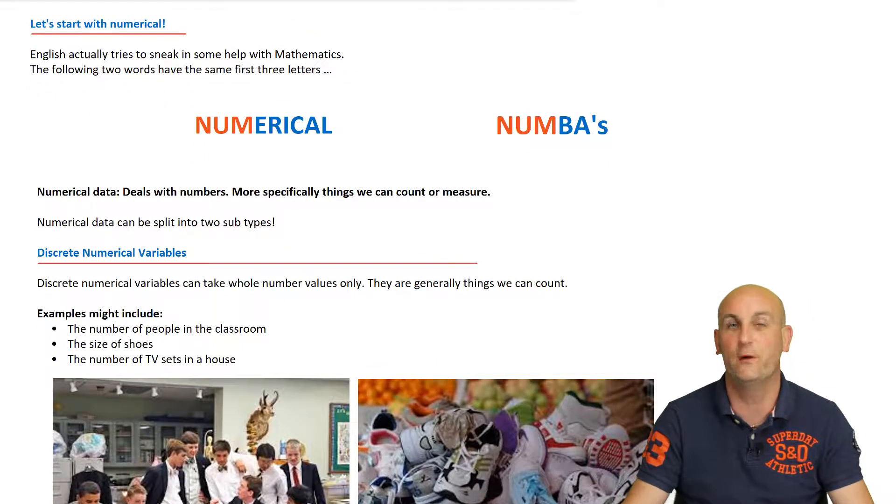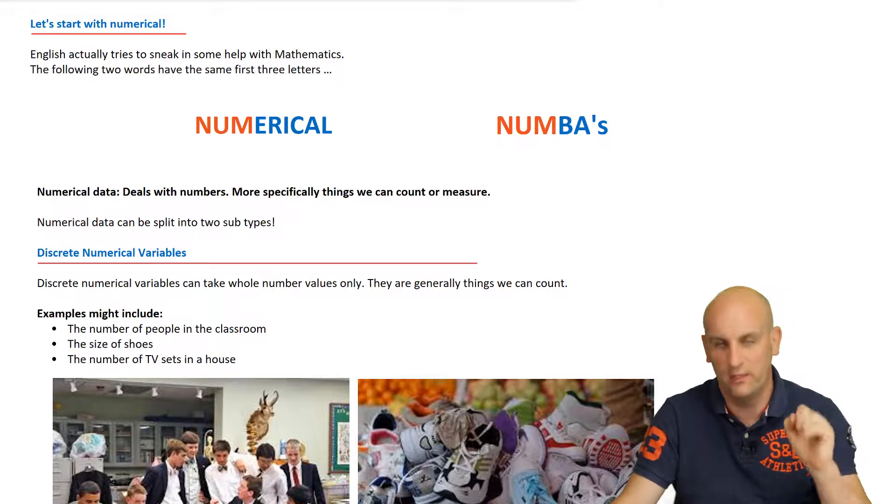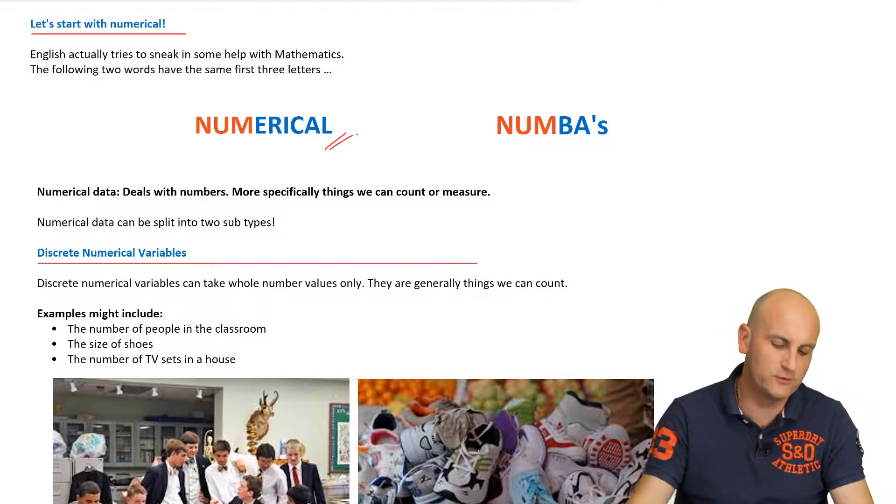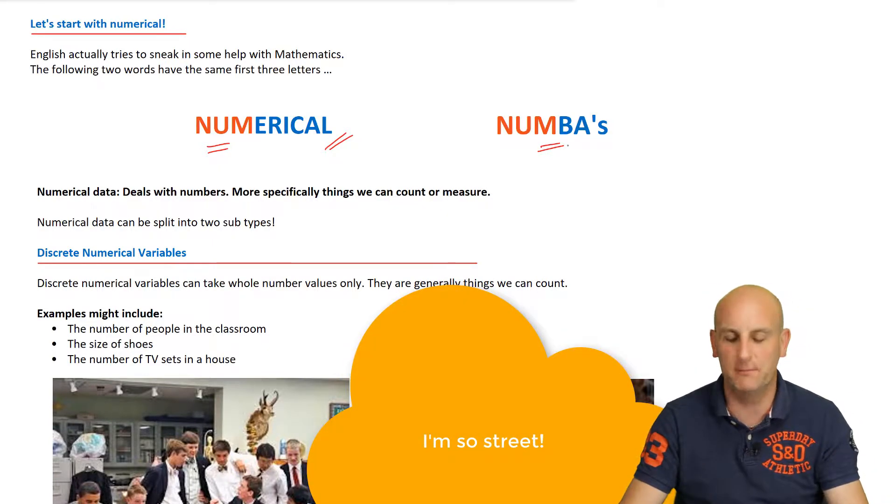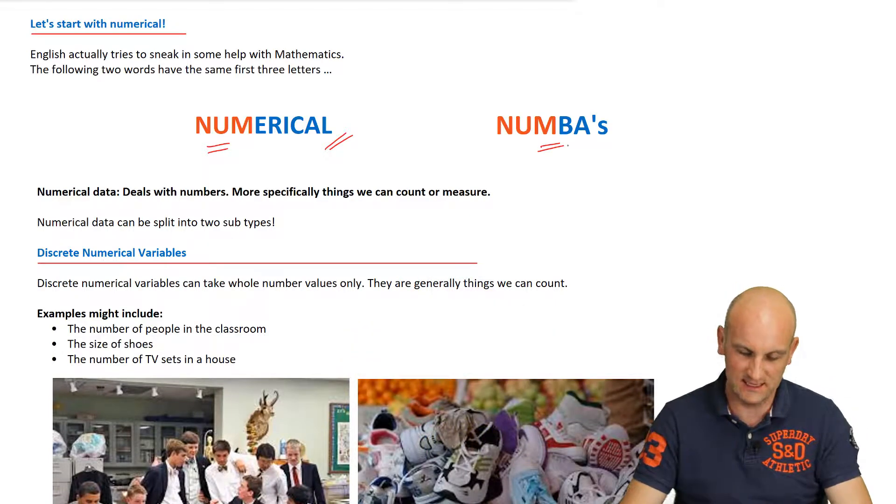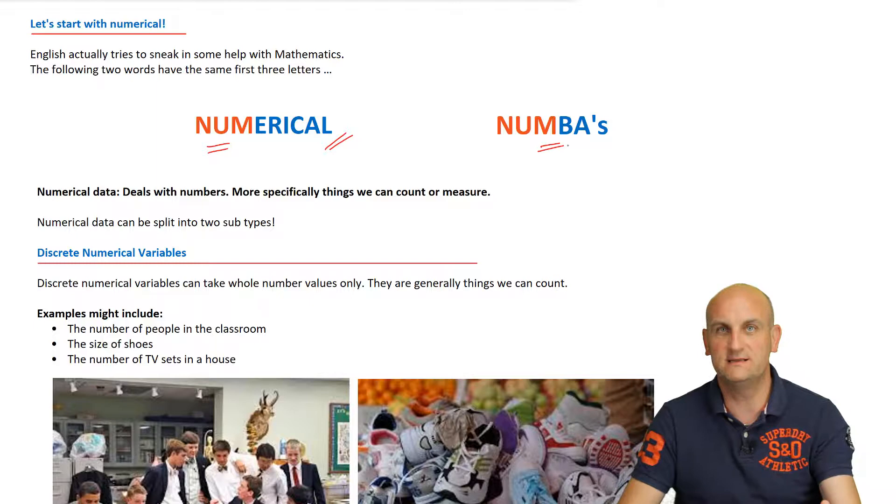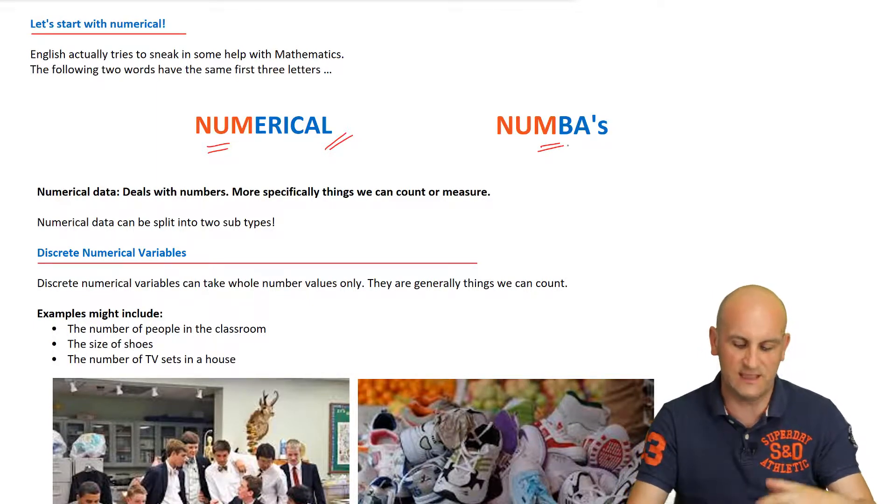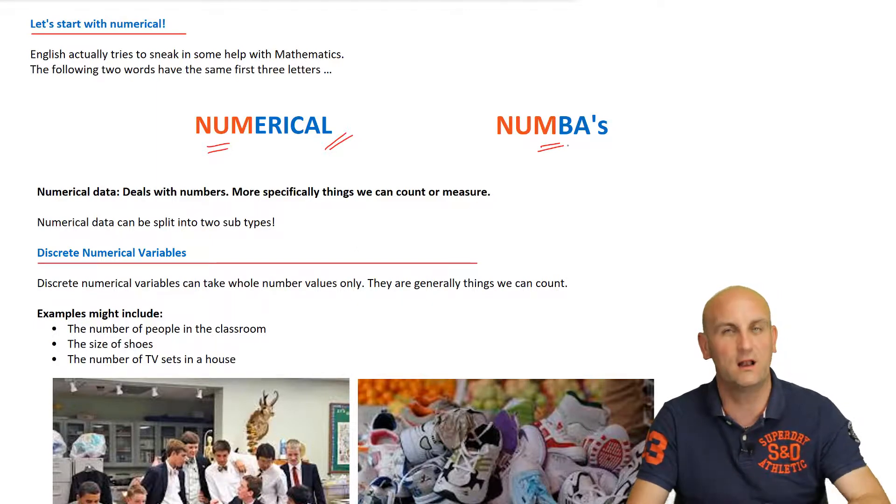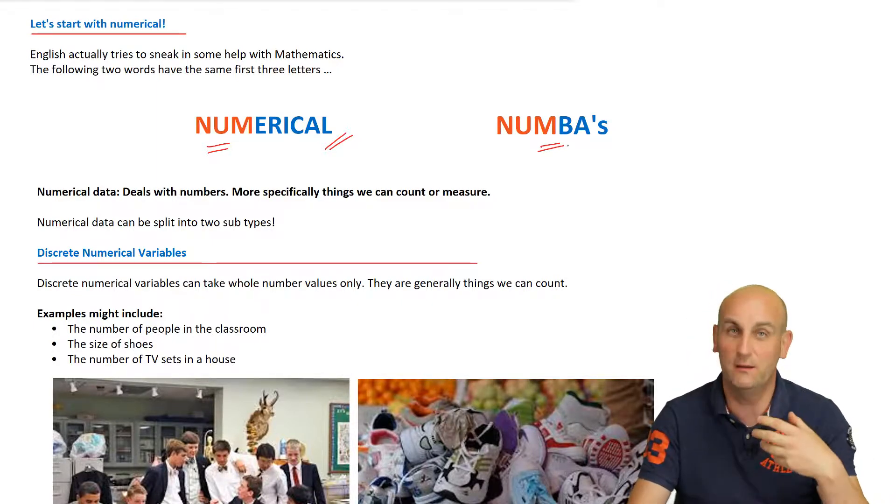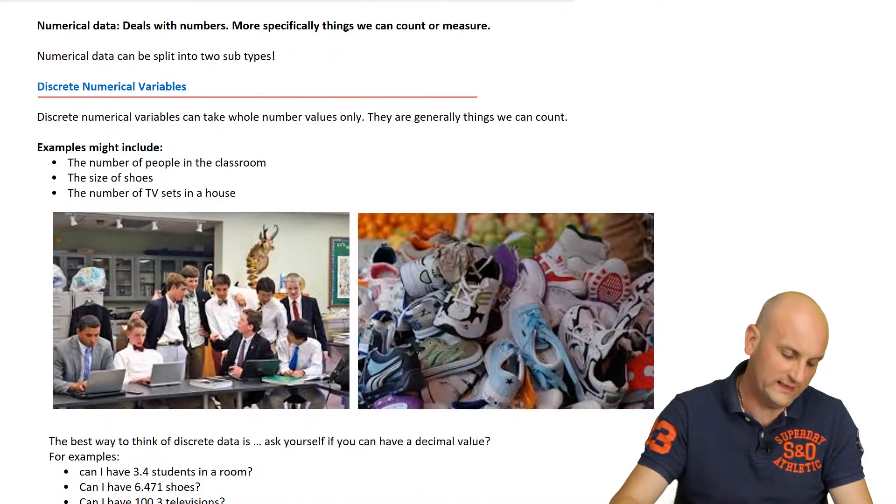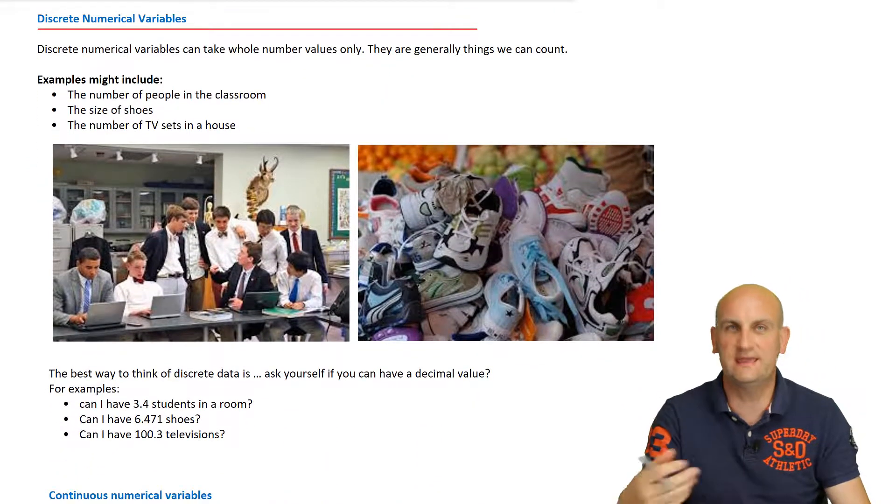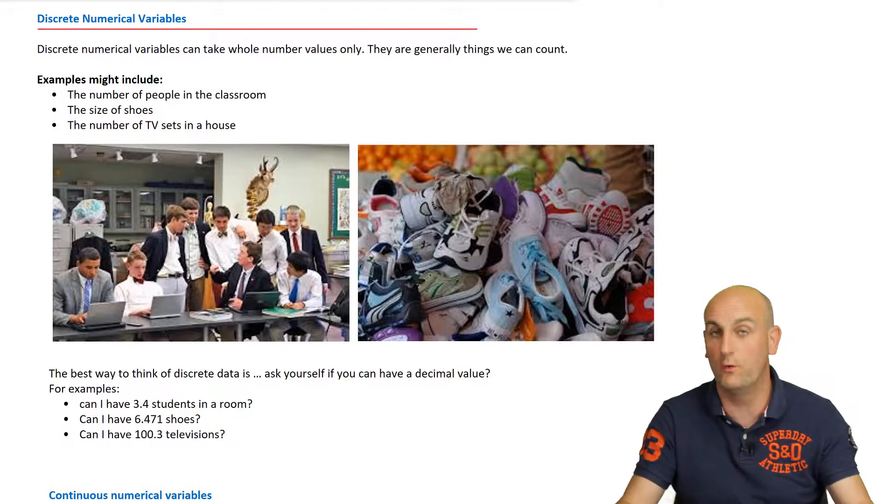Now there are two types of variables or two types of data out there that we tend to be able to categorize things into. One of them is numerical, and one of them is categorical. We're going to start with numerical first. Now why are we going to start with numerical? Because it's actually the easiest one to deal with. Now here's this word numerical, and it just so happens if you look at the first three letters, it's num, like numbas. Yes, I am a rapper because I'm using numbas rather than numbers. Please forgive me for this. It's a little bit lonely being a maths teacher. So numerical data deals with numbers. It is numbers that can be counted or measured.